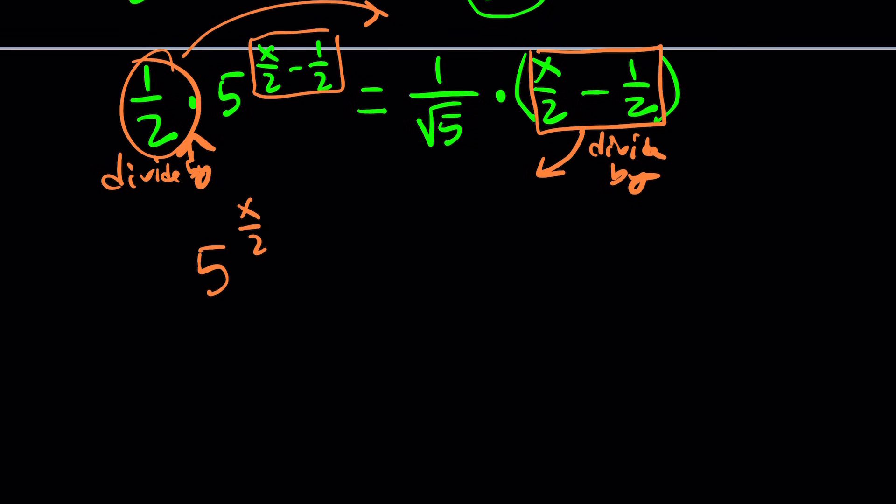And we'll get the following. 5 to the power x over 2 minus 1 half stays the same. We divide it by this, which is x over 2 minus 1 half. You see how they get together. Equals. Now I'm going to multiply both sides by 2. That'll give me 2 over root 5. Make sense? Great.